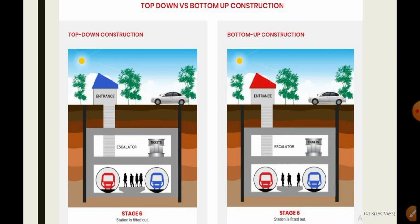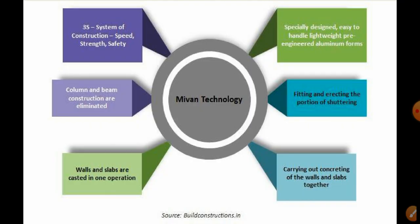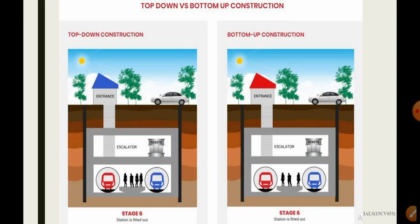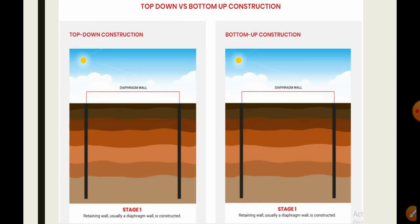In stage 6, the station is fitted out — and likewise in the top-down method, the station is fitted out. This is an example of the construction of structures done below the ground surface. Some of the construction procedures — how the 6 steps work: In the first step, there is stage 1 — the perimeter walls, construction piles, and placement of steel columns where the piles are constructed.